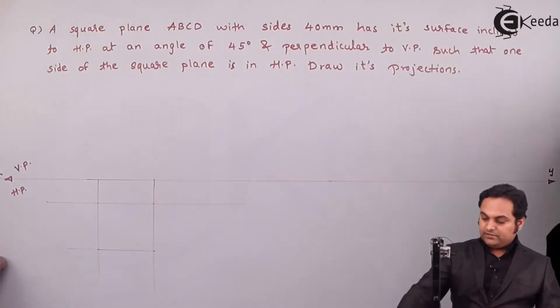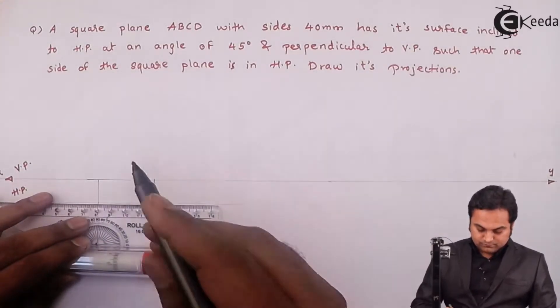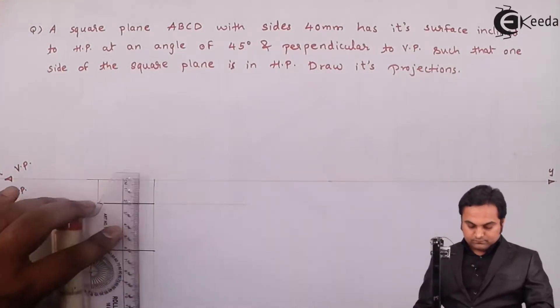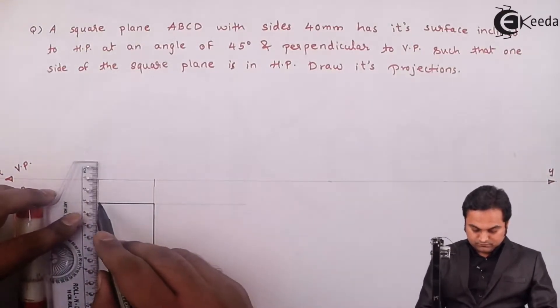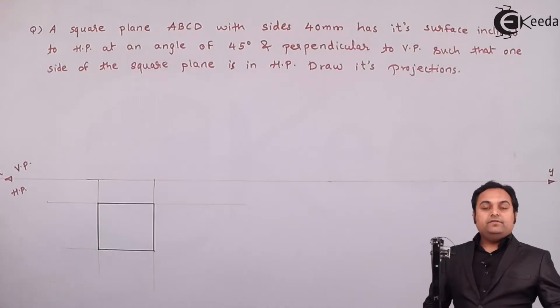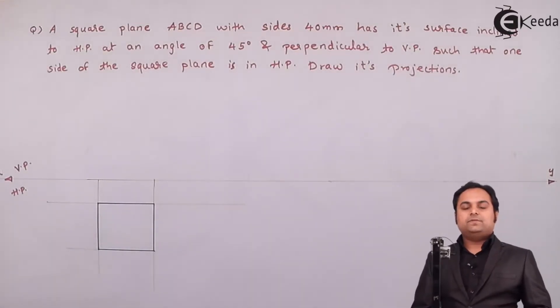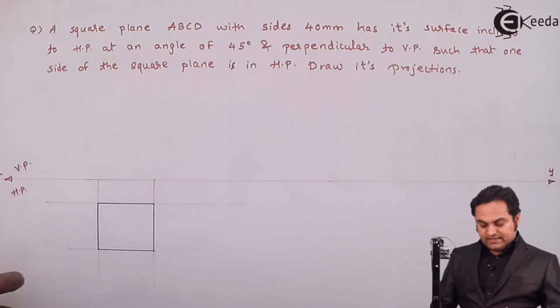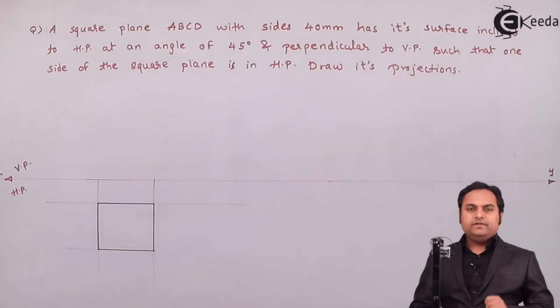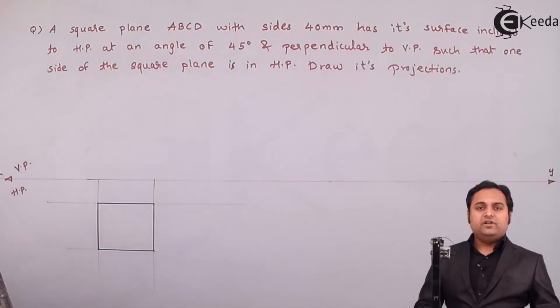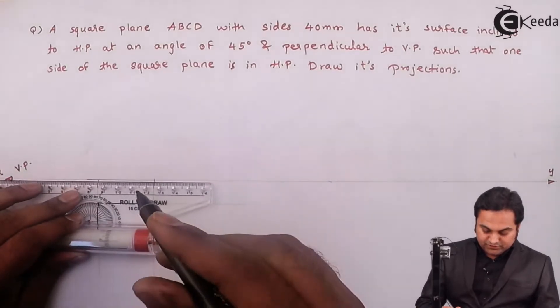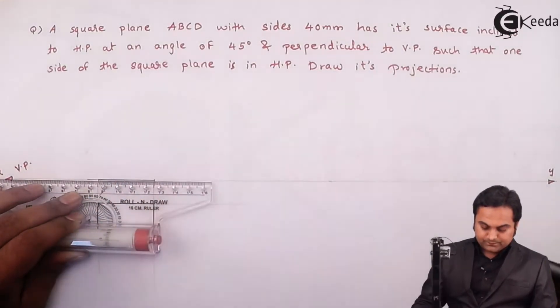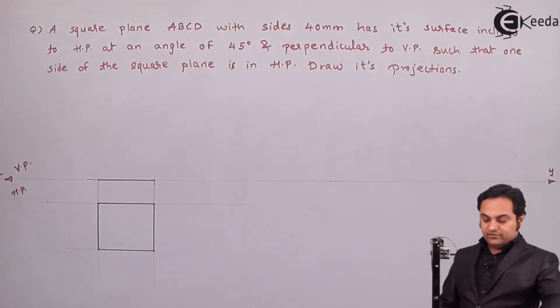In case of planes, if in one of the views we are getting the true shape—for example here we are having a square plane, so it is looking square in HP from the top—from the front it will appear as a line because planes have negligible thickness, and that line will coincide on XY. After that I'll give the notations here.